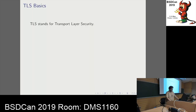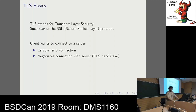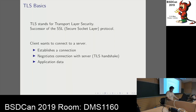TLS is the Transport Layer Security Protocol. It's the successor of the Secure Socket Layer Protocol. What it does is it connects a client to a server. The client establishes a TCP connection, negotiates a connection with the server — this is the TLS handshake — covering details like which crypto to use and what features of TLS will actually be needed. Once the handshake is done, the client and server exchange application data, and then they terminate the connection.